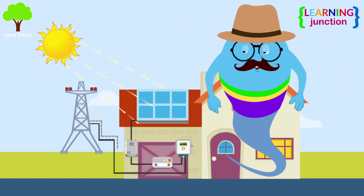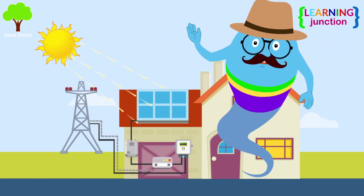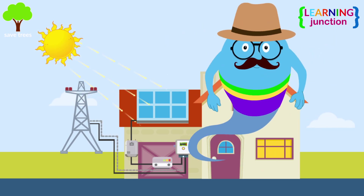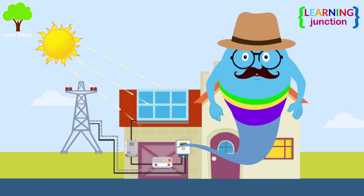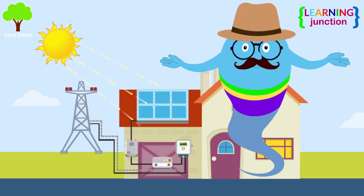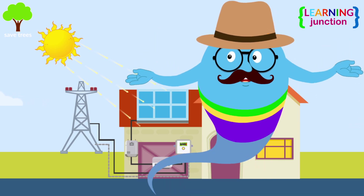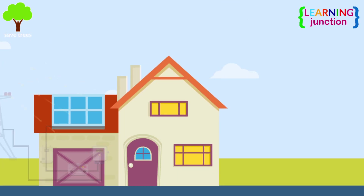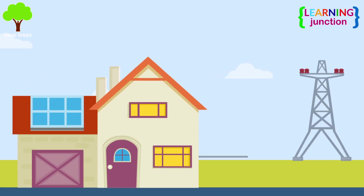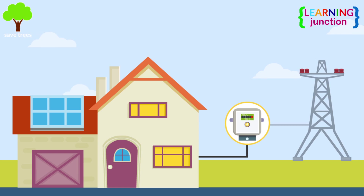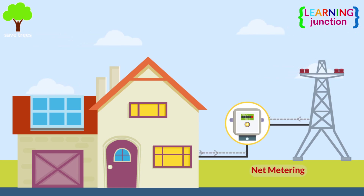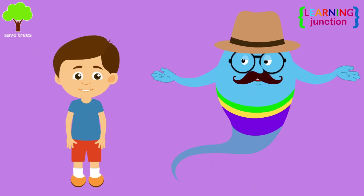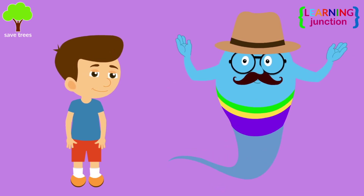If the site demands more power than what is provided, it will pull from the utility grid. If the sun produces more than the site needs, then the overproduction is put back to the grid for a credit in a process called net metering. This is how a solar panel works.